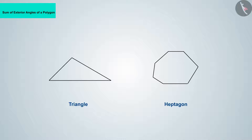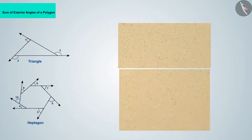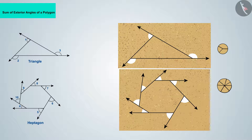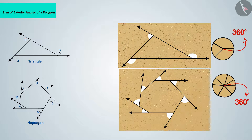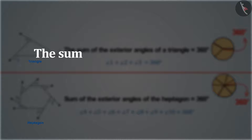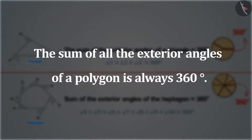Placing other polygon figures on cardboard and cutting their external angles, we see they also form a circle like the hexagon. The sum of the external angles of these figures is also 360 degrees. Consequently, the sum of all exterior angles of any polygon is always 360 degrees.